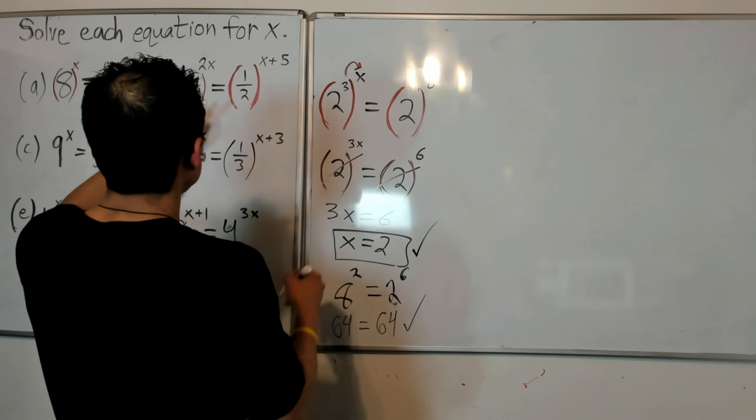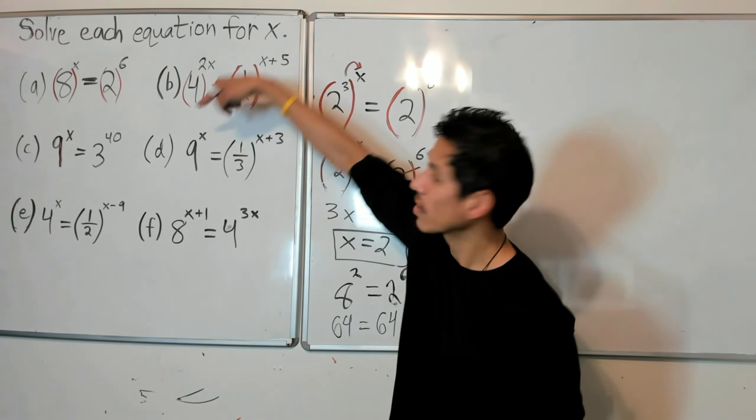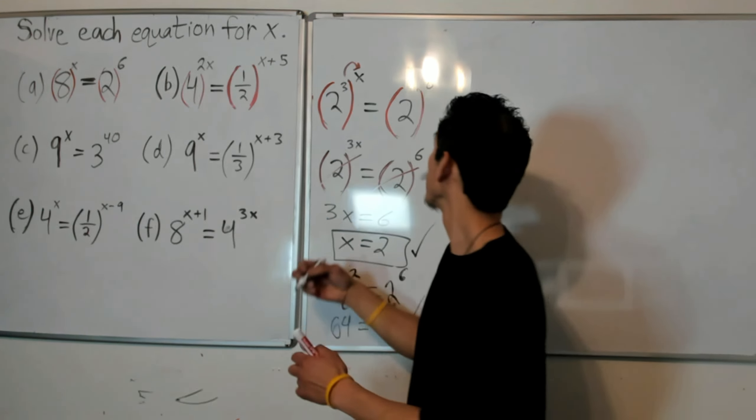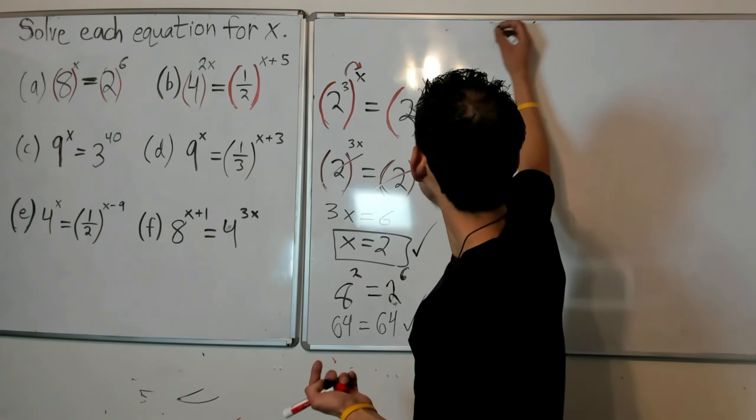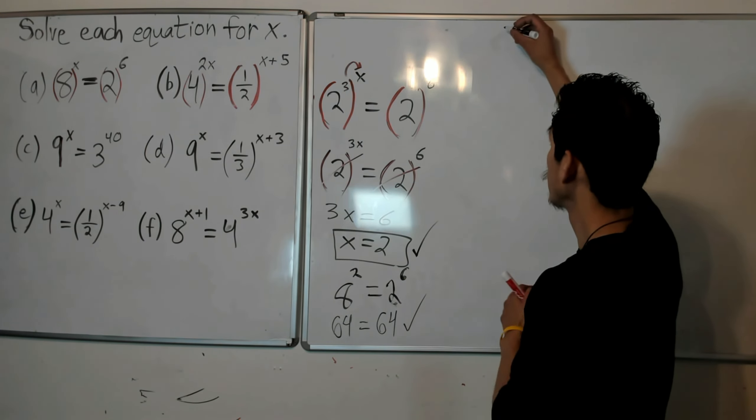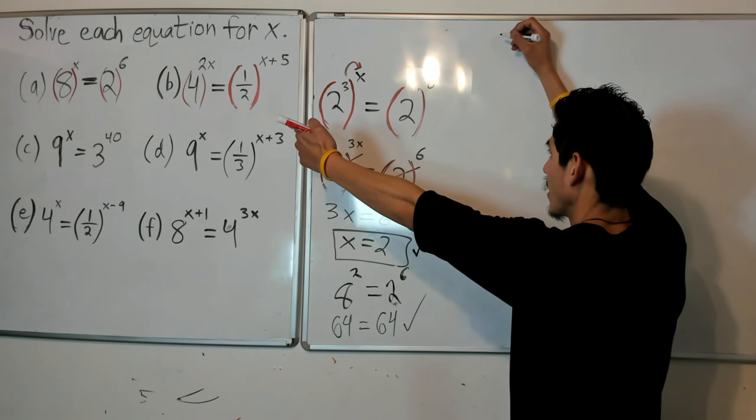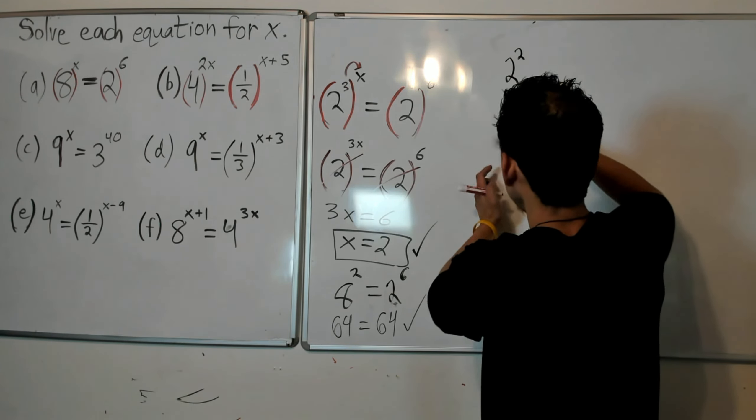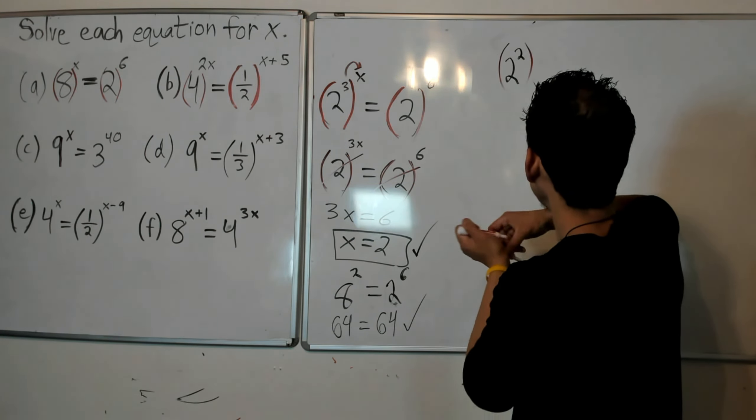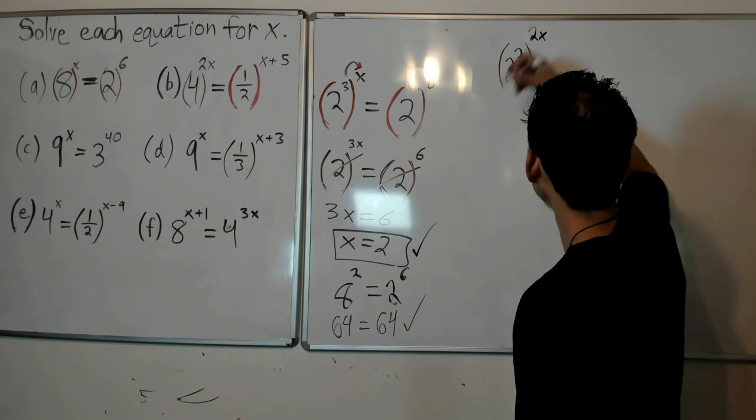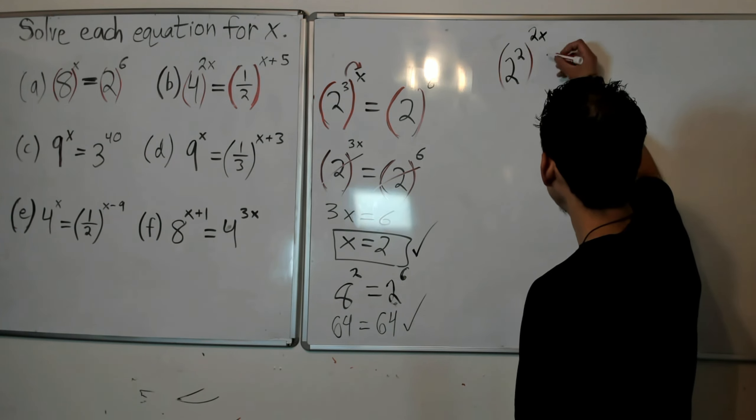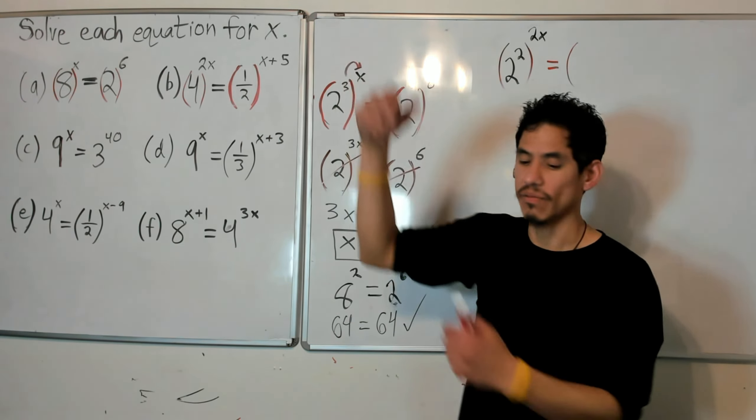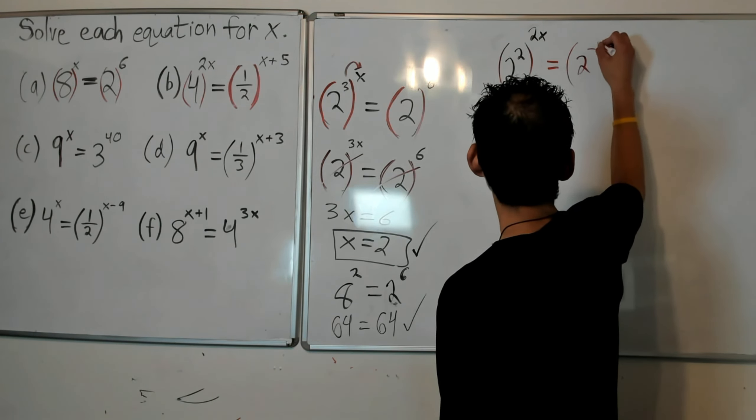The next one. So my bases here are 4 and 1/2. I'm going to write that 4, that's 2 to the 2. 2 to the 2 inside parentheses, because that's the same as 4, all to the 2x, equals 1/2 is the same as 2 to the negative 1.